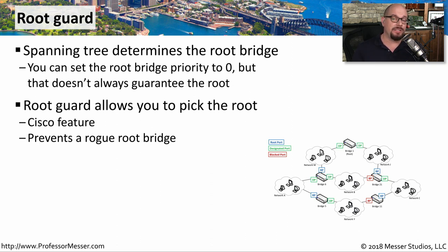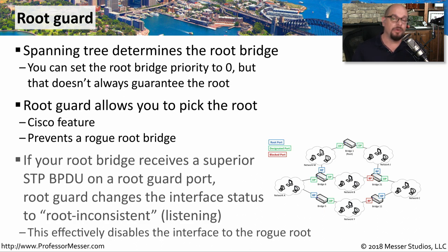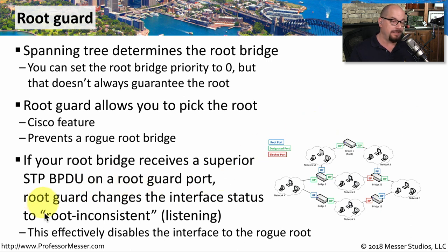If someone connects another switch configured with a root bridge priority of zero and a lower MAC address, Root Guard means it still cannot become the root bridge. If the switch receives a higher-priority spanning tree BPDU on that interface, it will put that interface into listening status, shown as root inconsistent. This effectively disables inbound traffic from that interface — which may create connectivity problems for others on that link — but it prevents someone else from taking over the root status on the network.